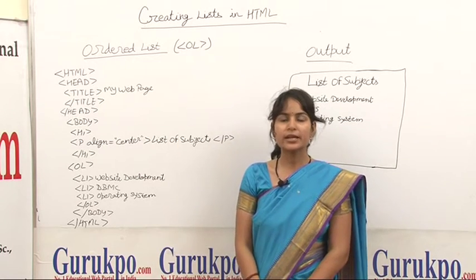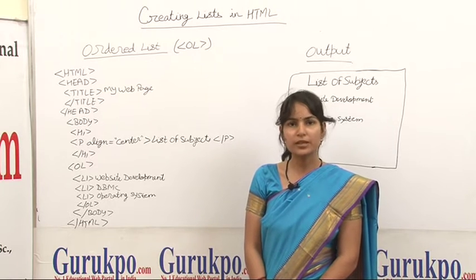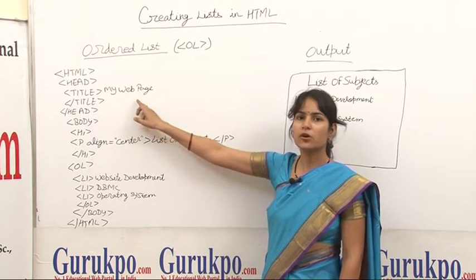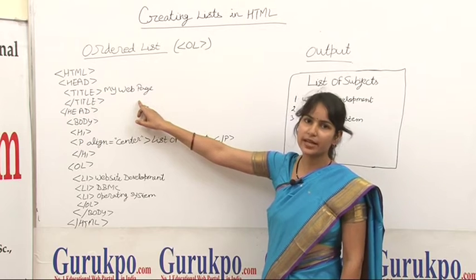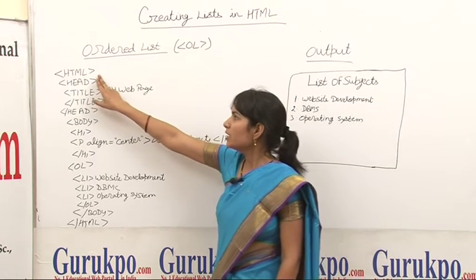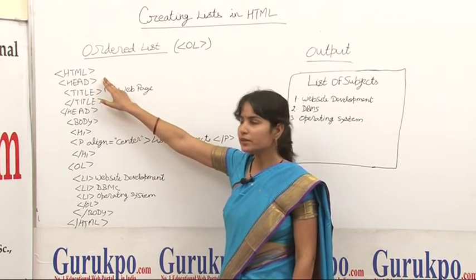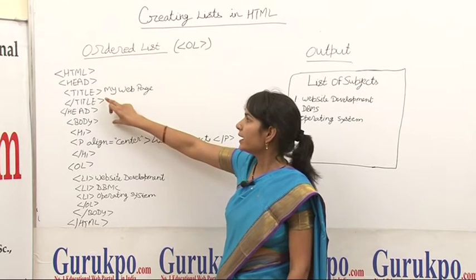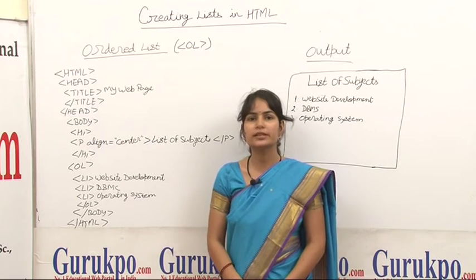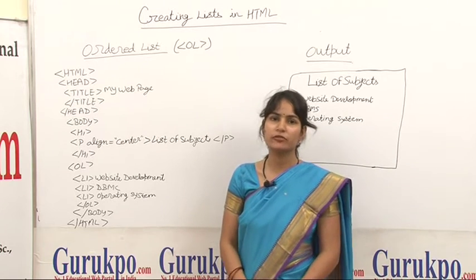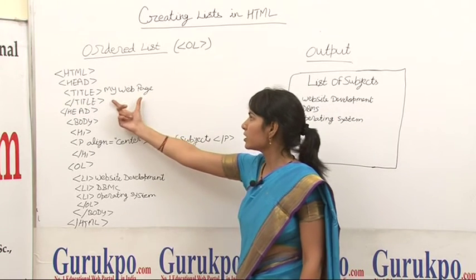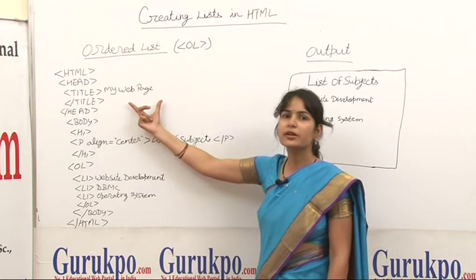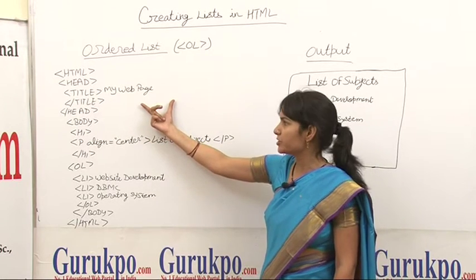The OL tag is used to specify the numbered list. Here we show an example of how to create an ordered list in HTML. First of all, we will create an HTML tag to start the program. Next, the head tag and title tag show the title of the web page. We show 'my web page' as a title, and it is displayed on the title bar of the web page.